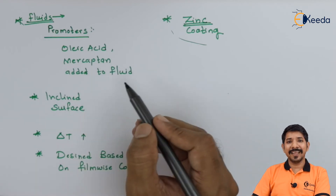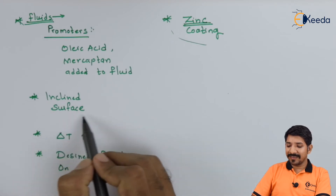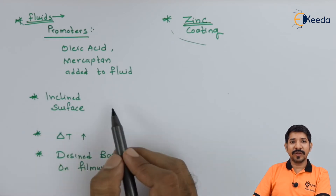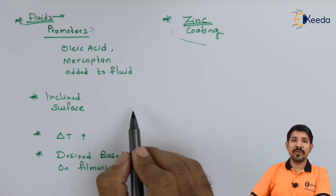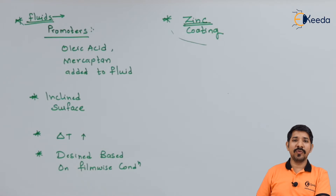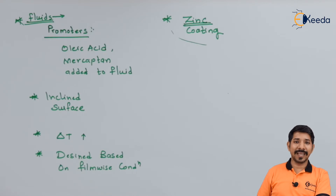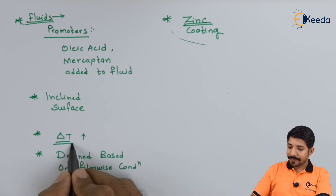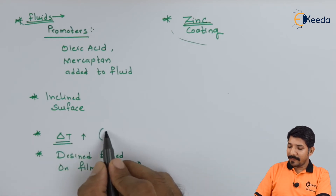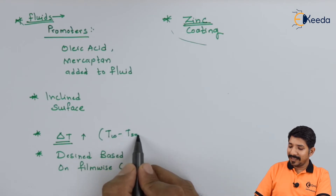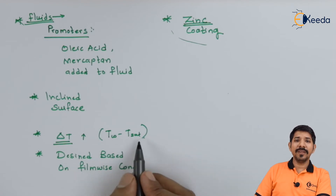Another way to enhance heat transfer in condensation is by making the surface inclined. If the surface is inclined, whatever film or drops form on the surface will be eliminated quickly, exposing the surface to the vapor and increasing the heat transfer rate. Also, making the delta T high — ensuring T_wall minus T_sat is quite large — will accelerate condensation, and due to the higher mass flow rate, the surface will be cleared quickly, which in turn increases the heat transfer rate.